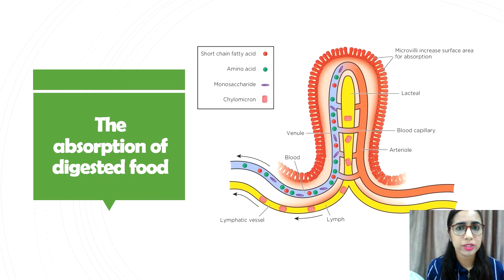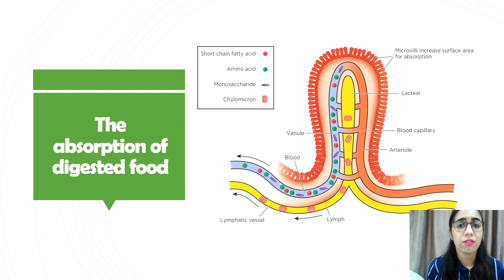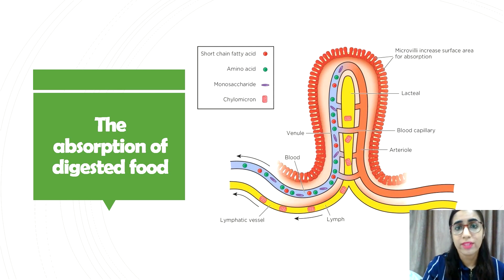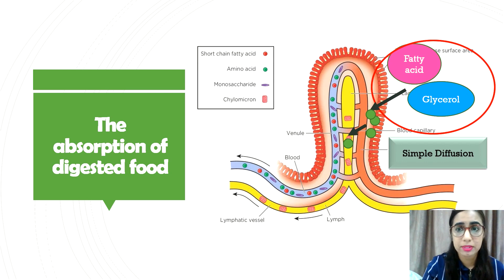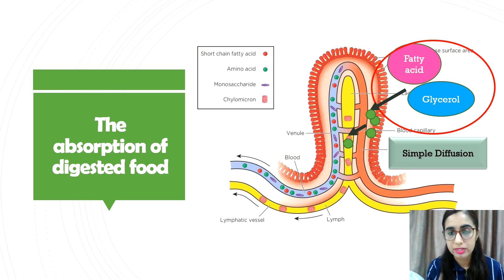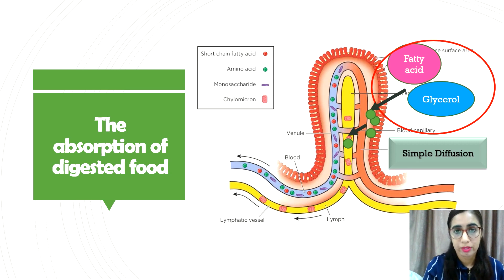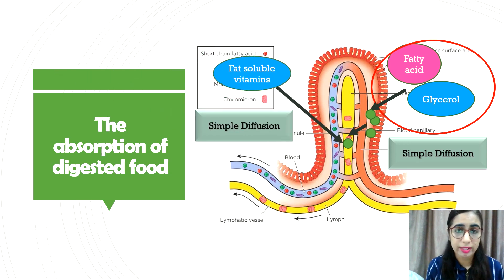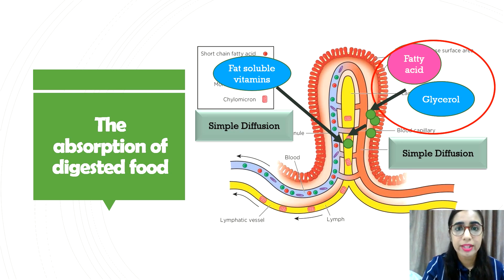In the lacteal, the absorption of fatty acids, glycerol, and fat-soluble vitamins takes place. Fatty acids and glycerol diffuse by simple diffusion from the lumen to the epithelial cells, where they recombine to form lipid droplets before diffusing into the lacteal of the villi. Fat-soluble vitamins A, D, E, and K also diffuse into the epithelial cells and then into the lacteal together with the lipid droplets.